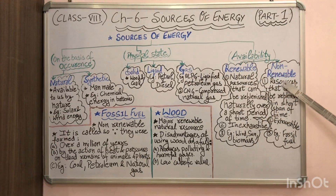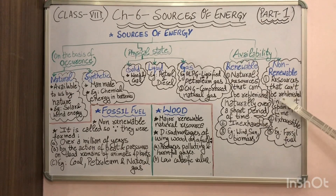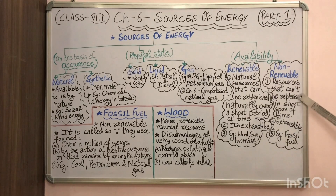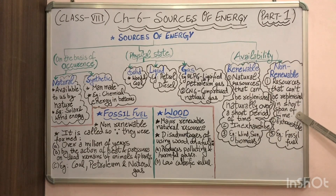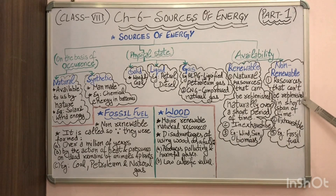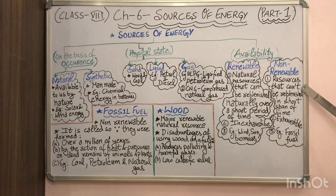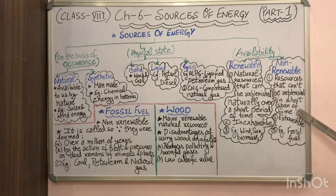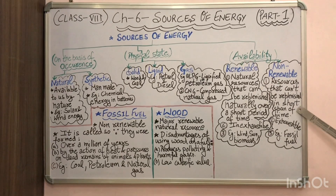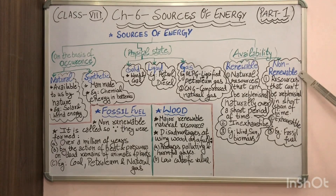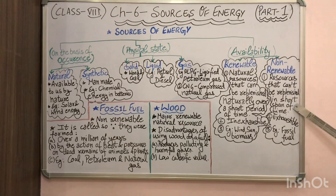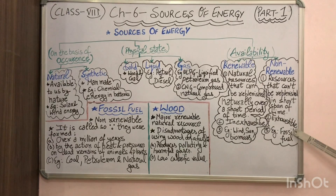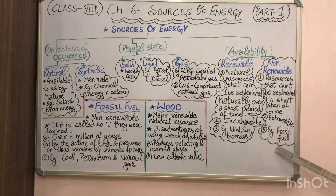On the other hand, non-renewable sources are those which cannot be replenished in a short span of time. If they are finished once, they are finished forever — you cannot regain them. It takes millions of years for them to be replenished. Those resources are called non-renewable sources of energy. Since they can be finished, they are called exhaustible natural resources. Examples are all the fossil fuels.